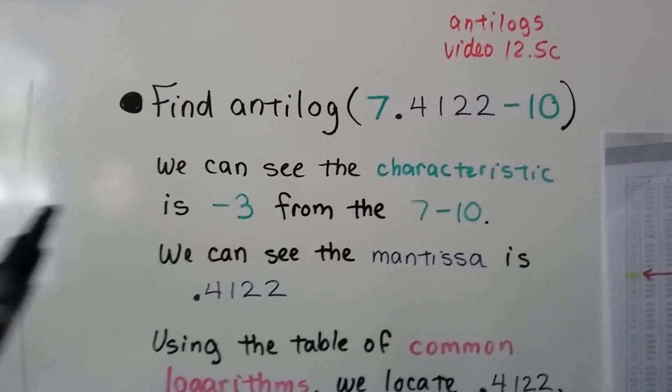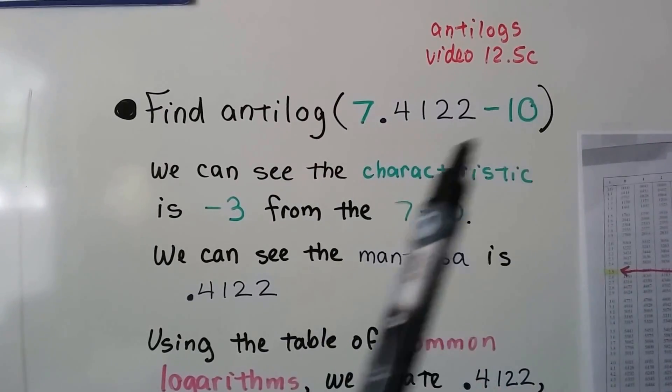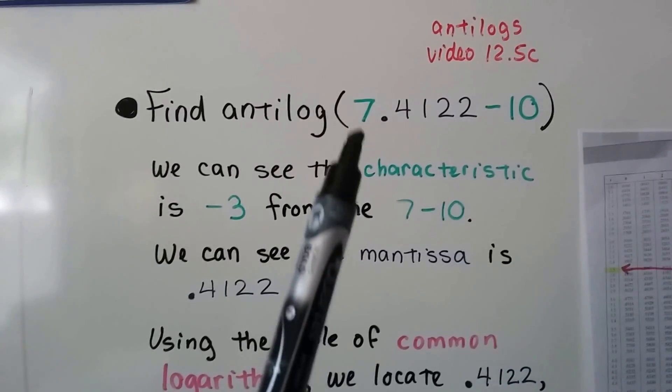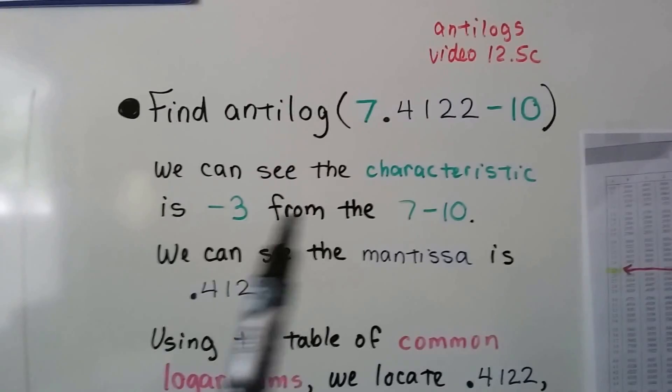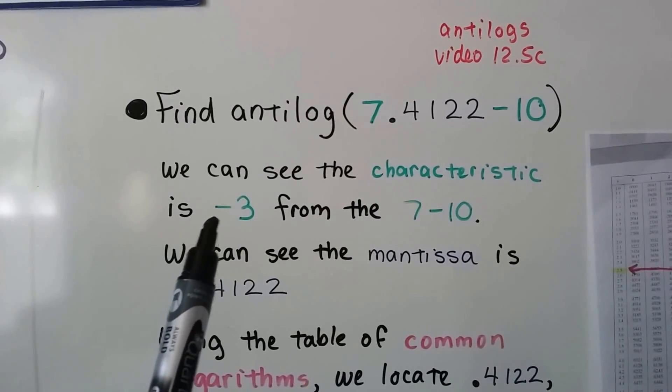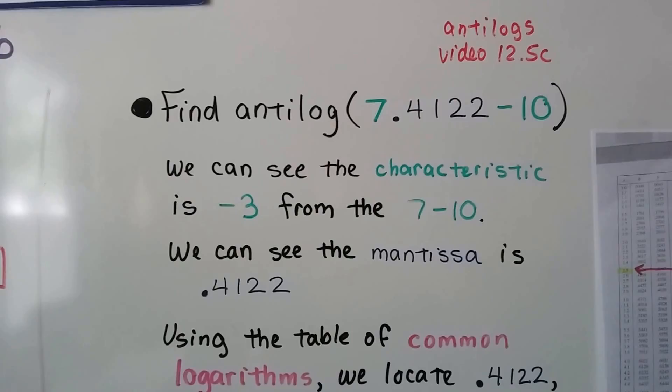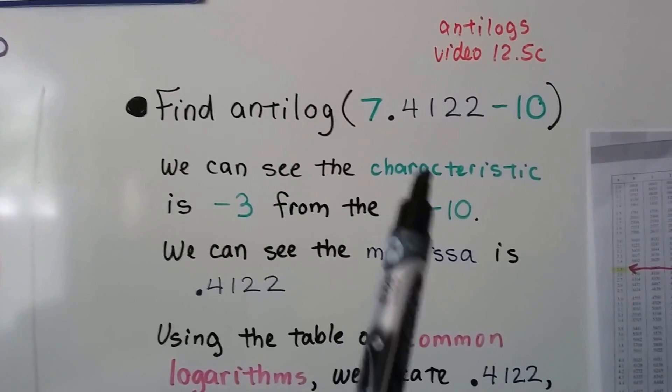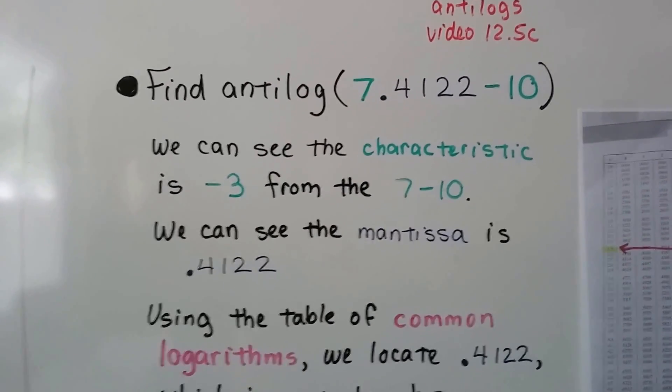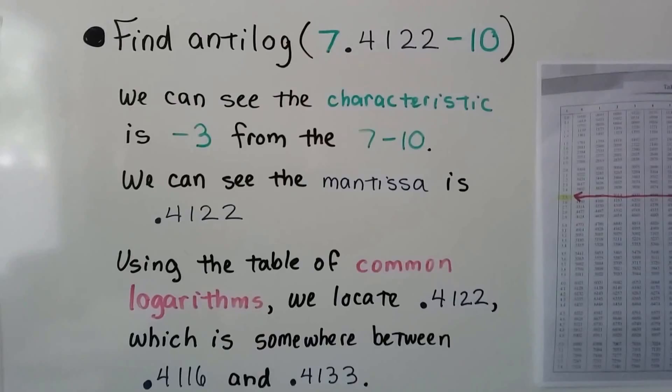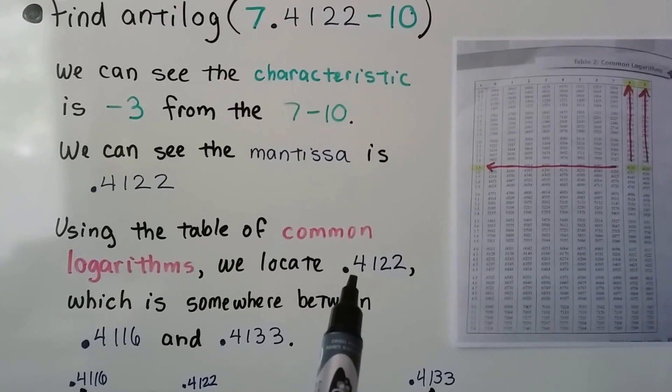So we've discussed how I have this green on purpose because that's our characteristic. We've got a 7 and a minus 10. Well, then our characteristic is a negative 3. It's represented as a 7 minus 10. That equals negative 3. We can also see the mantissa, the .4122.